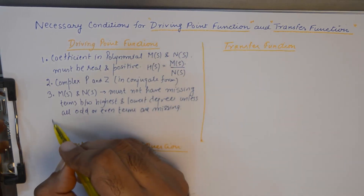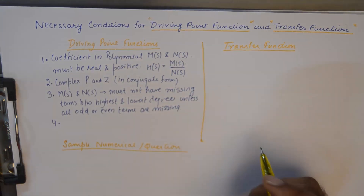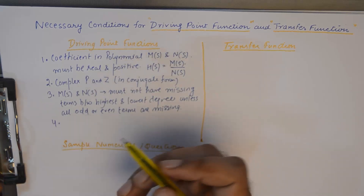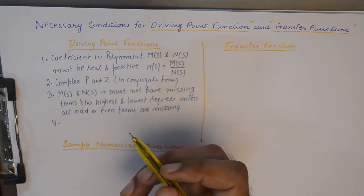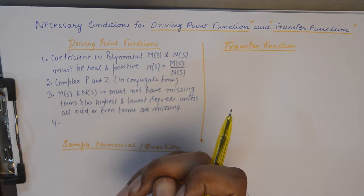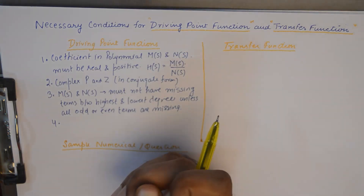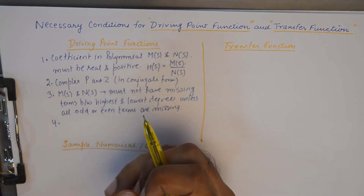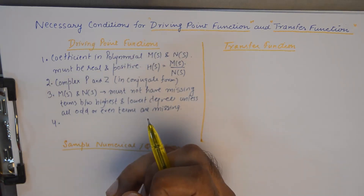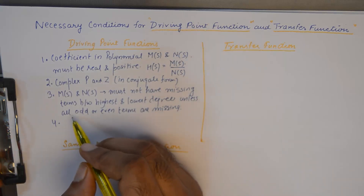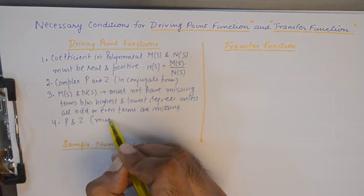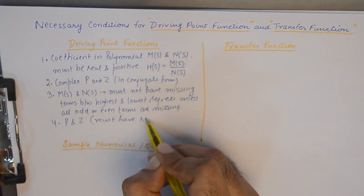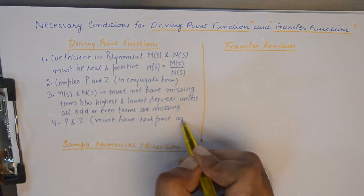The fourth point is that the real part of all poles and zeros must be negative, not positive. If you have a pole or zero which is complex, its real part should be negative. If the real part is zero, then the pole or zero must be simple — it should not be complex.